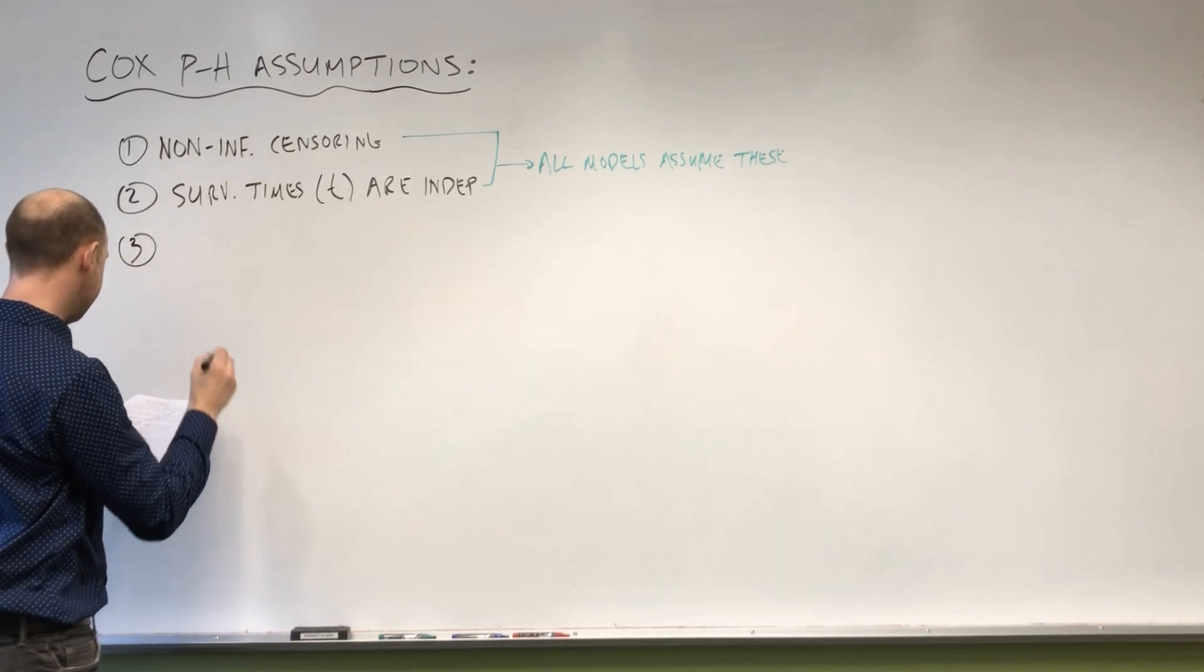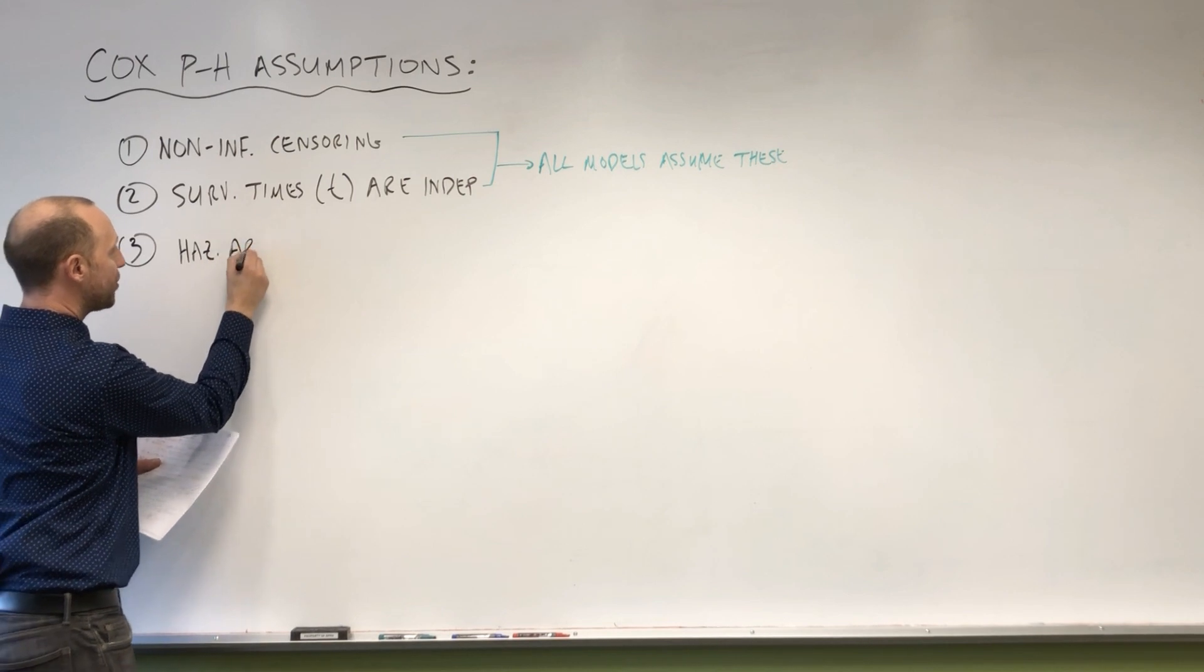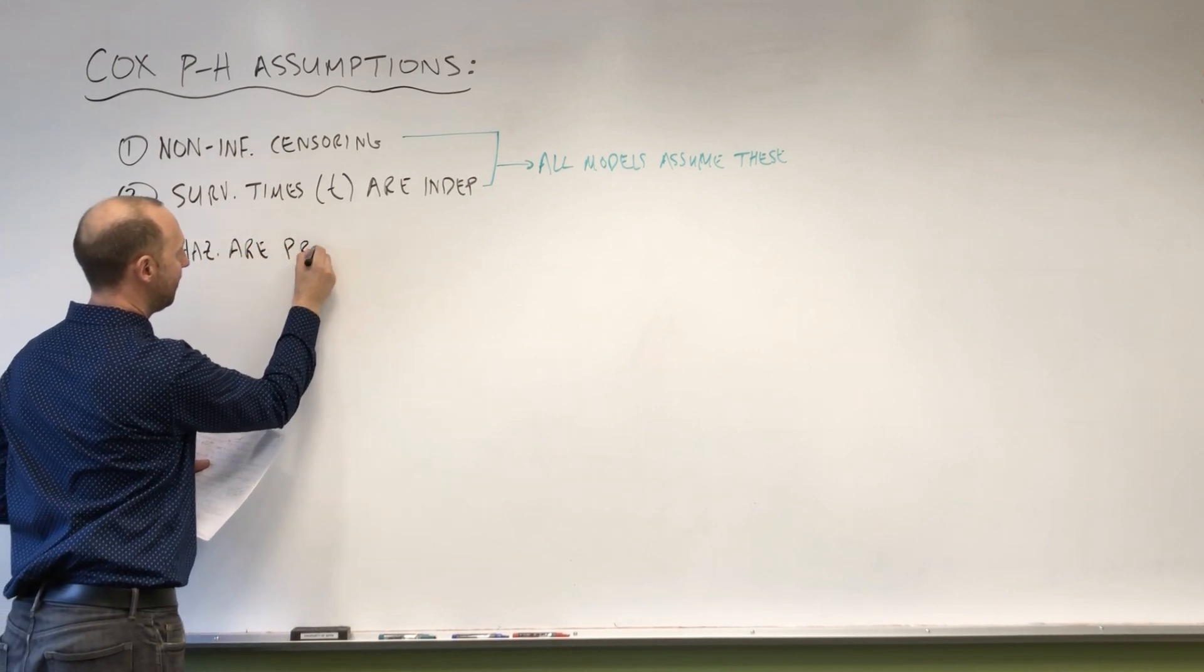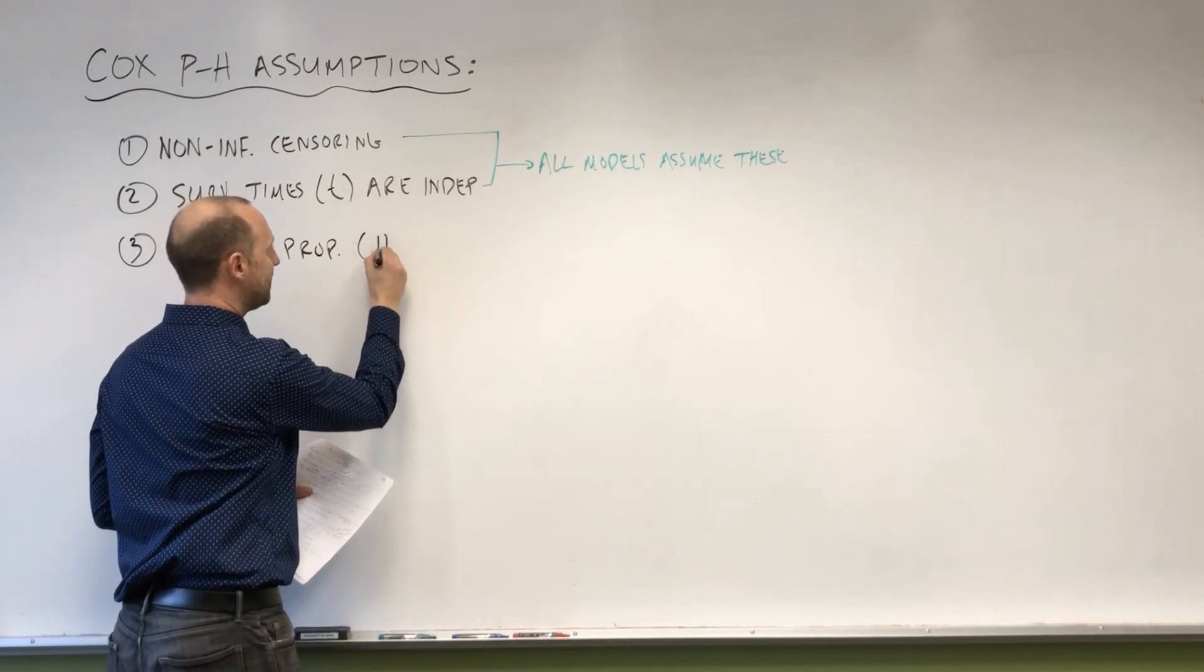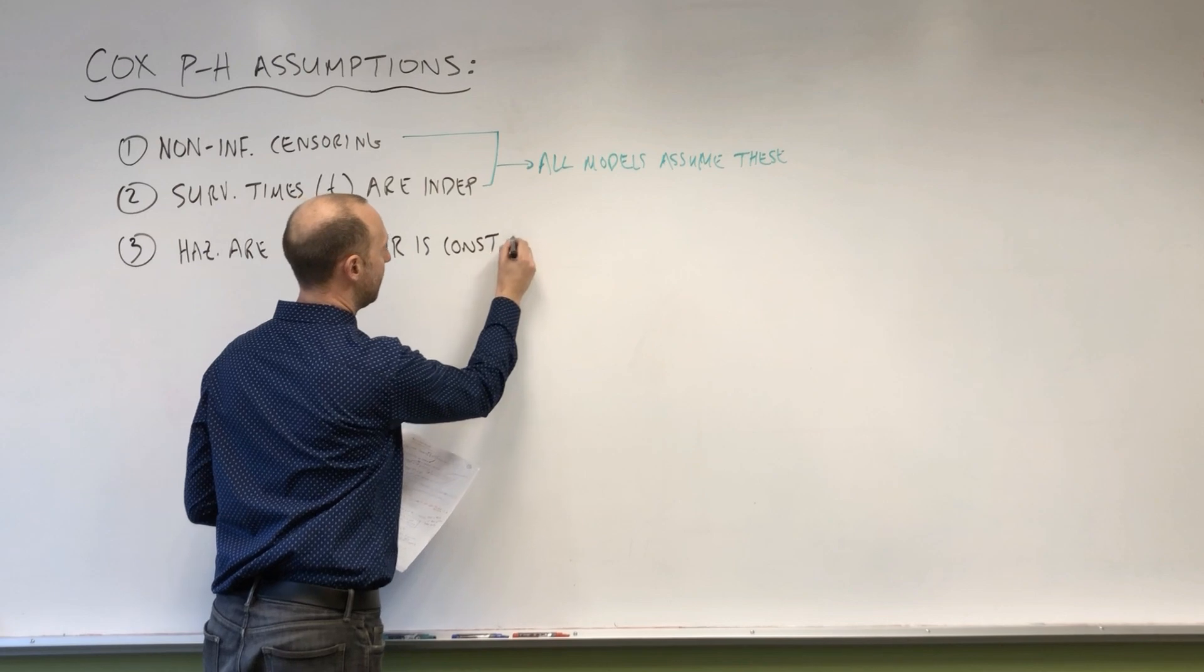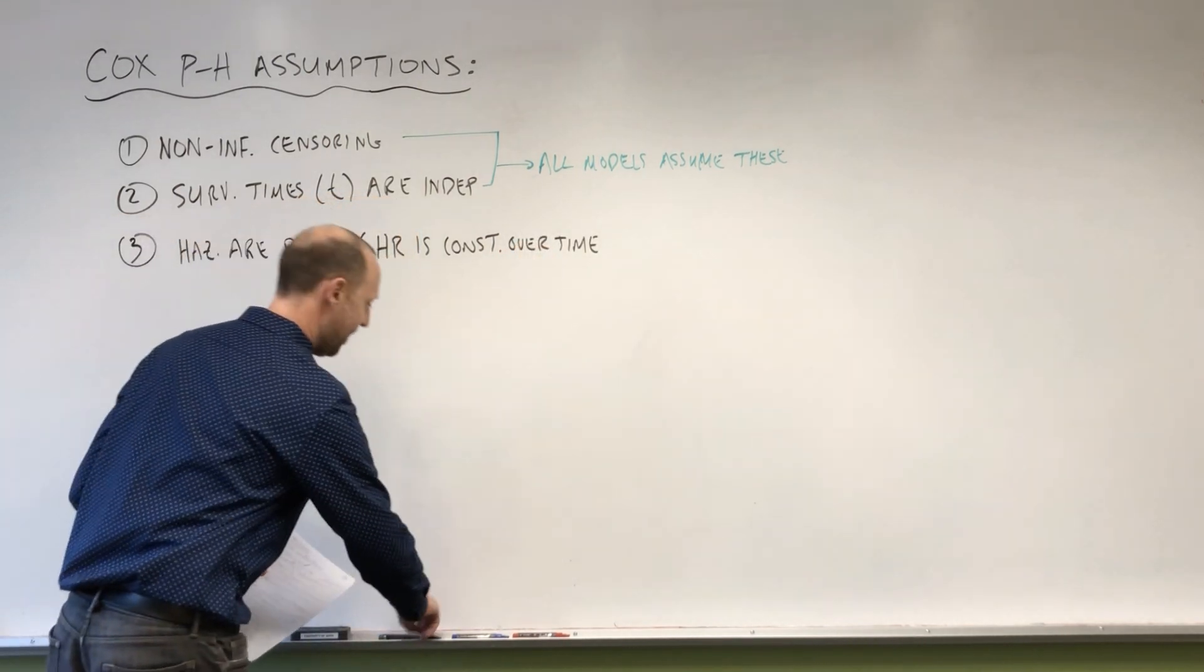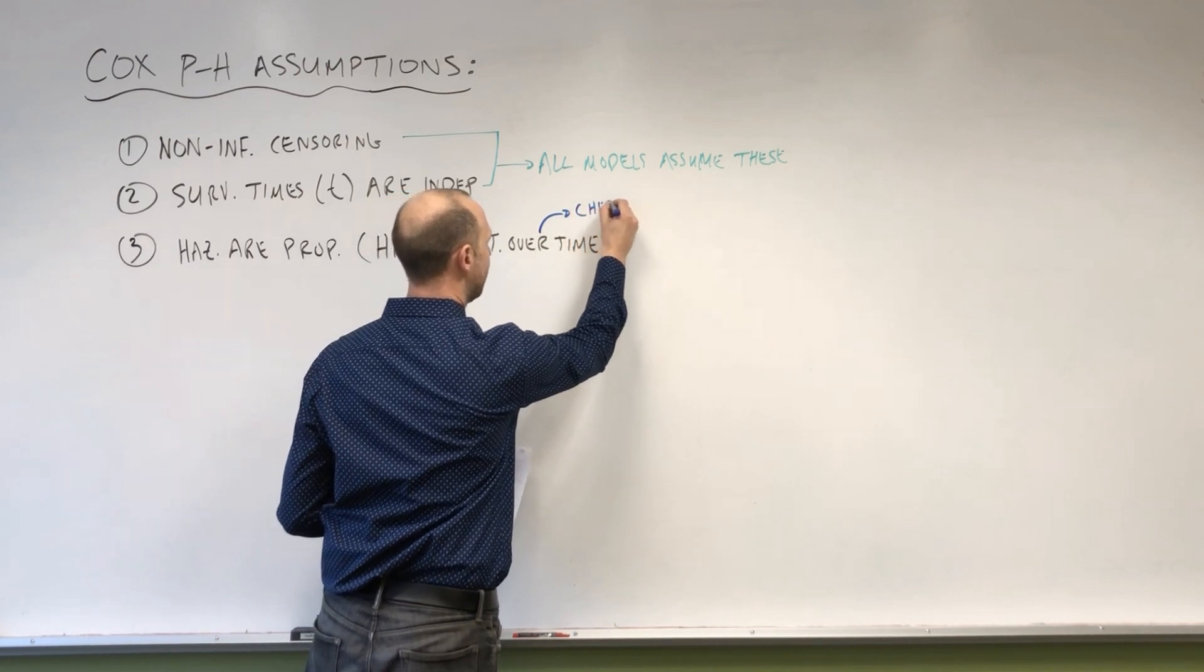The third assumption is that hazards are proportional. Or said another way, we can think of it is that the hazard ratio is constant over time. Maybe I should mention it now, some ways we can check that, and we'll look at the details of some of these later.